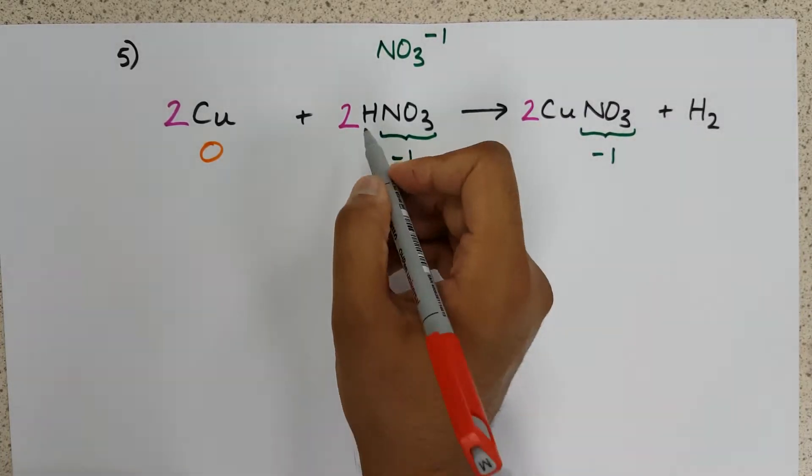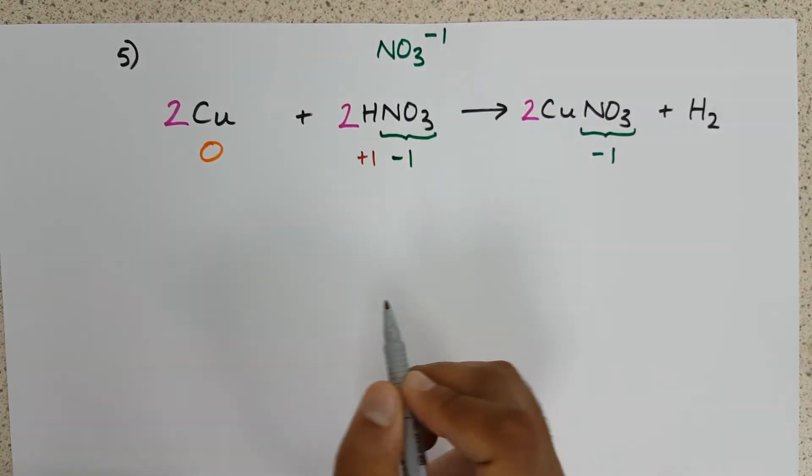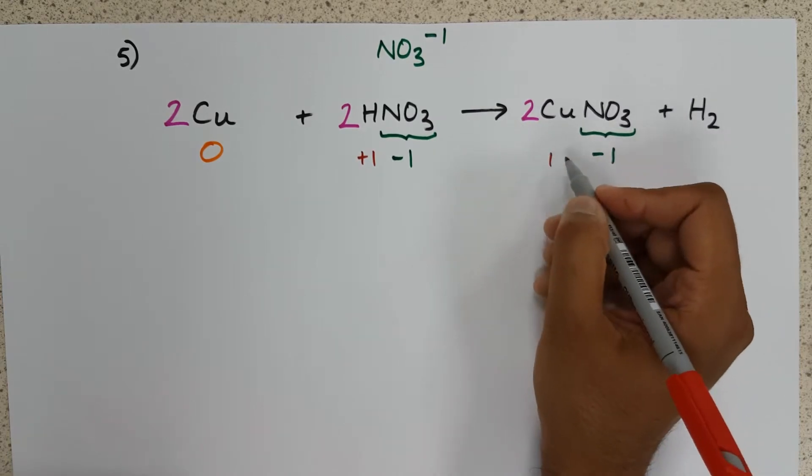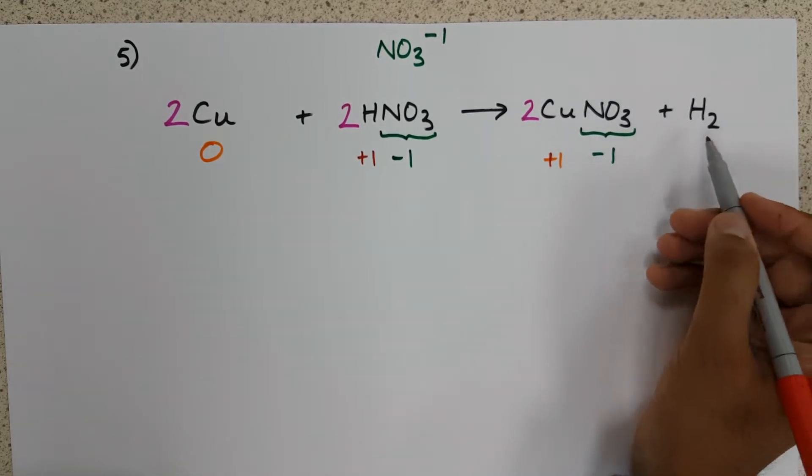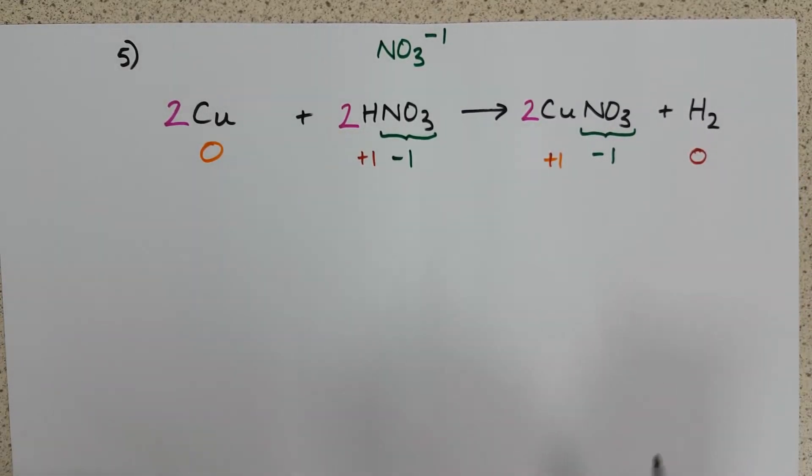Which means that our hydrogen is a plus one, and our copper must also have become plus one. And the hydrogen is now in its uncombined state, elemental form zero.